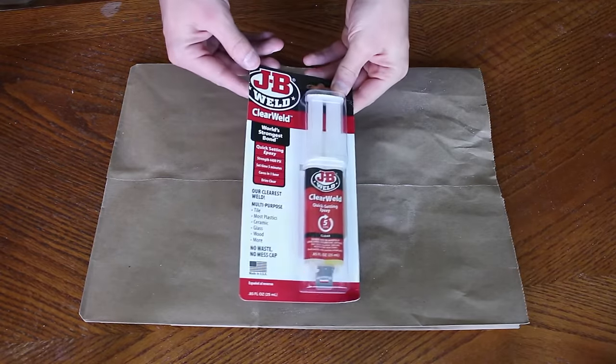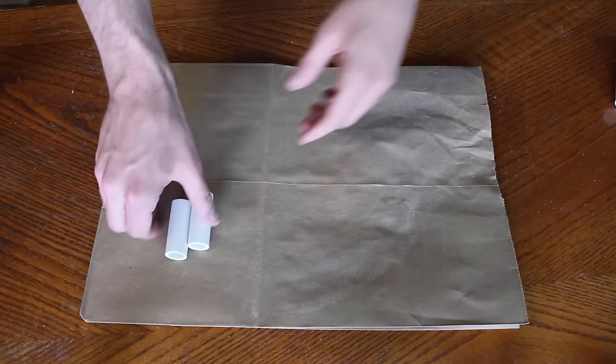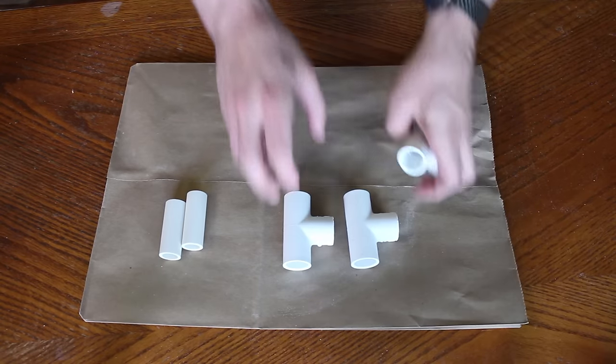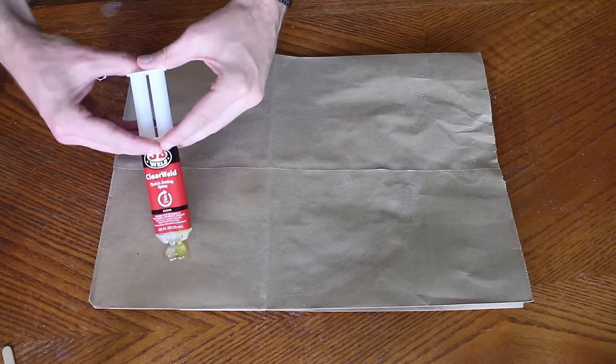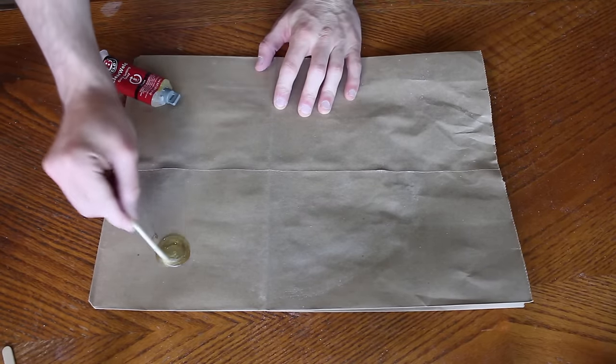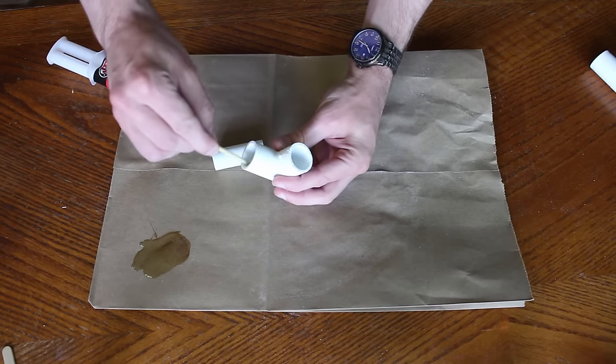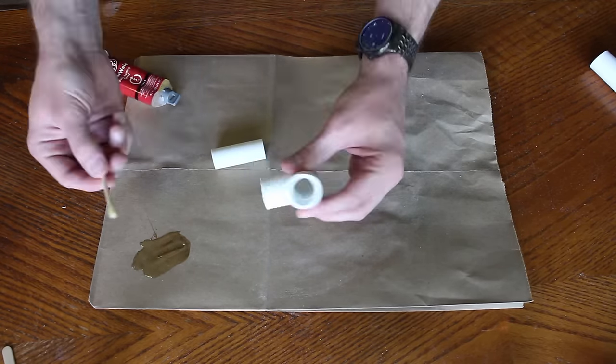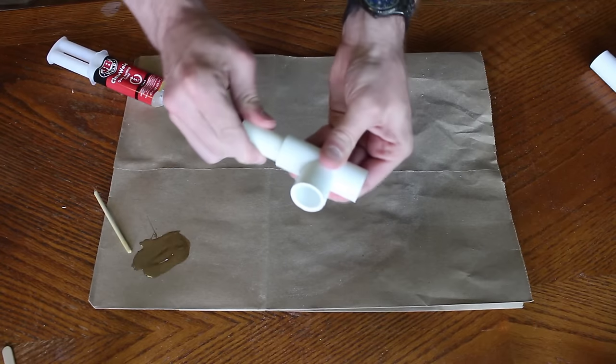I'm going to use this epoxy to hold together a few of the components. We'll start with the 2 2 inch lengths. We're also going to need 3 tees. First we'll mix up some epoxy. Then place a little bit in either side of one of the tees. Then we'll stick the pipe inside.